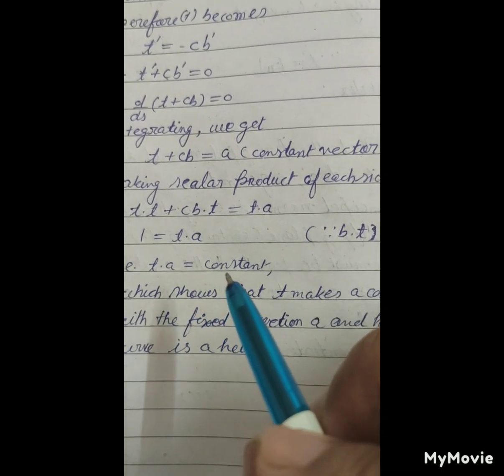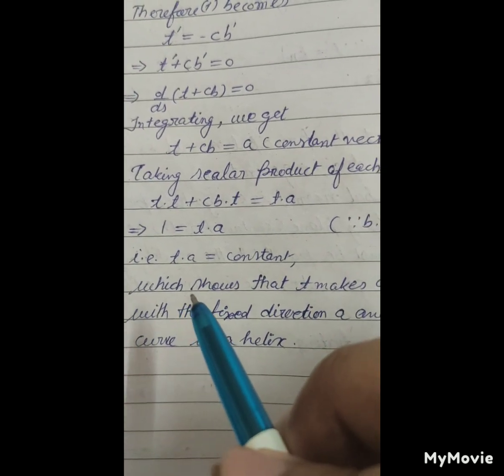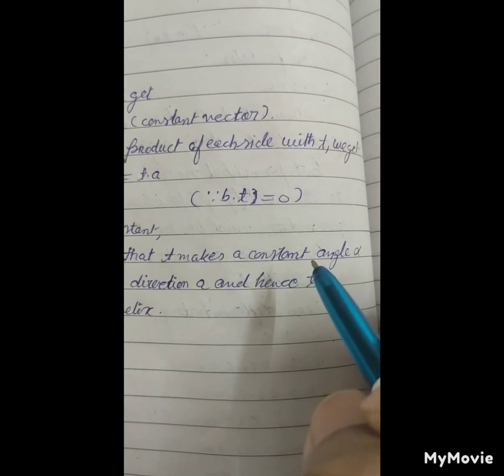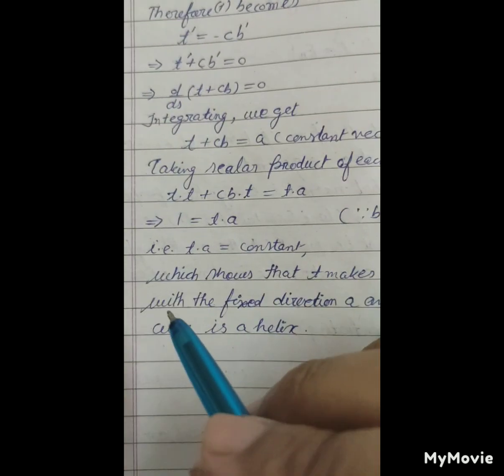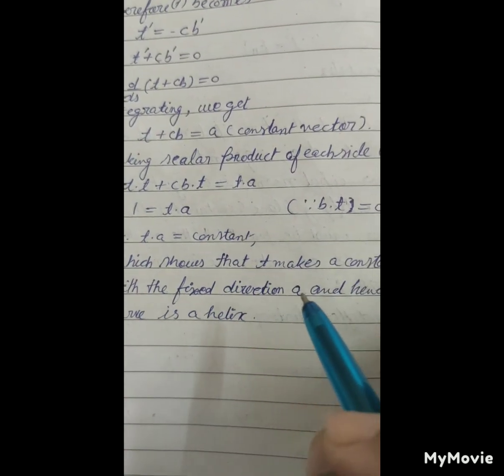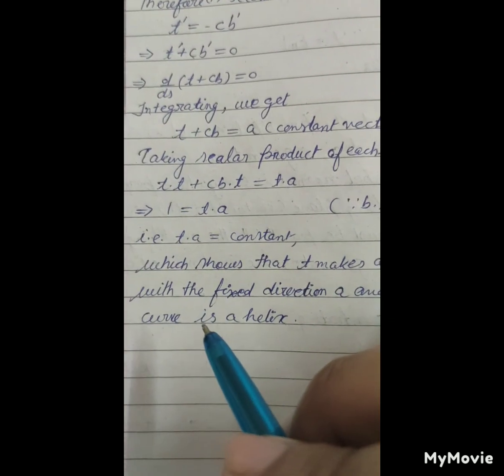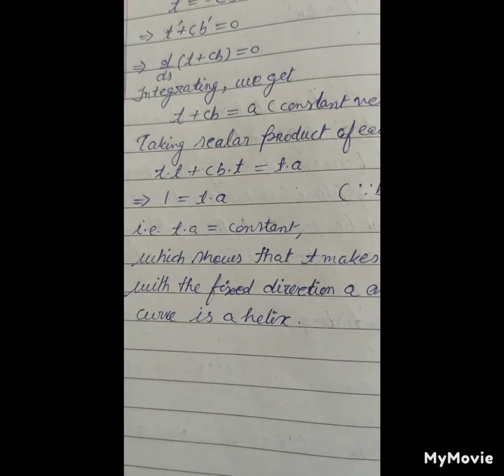Therefore t dot A equals constant, which shows that t makes a constant angle alpha with the fixed direction of A, and hence the curve is a helix.